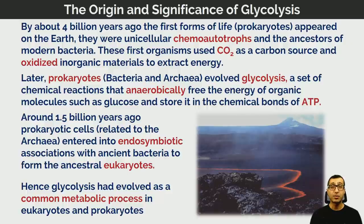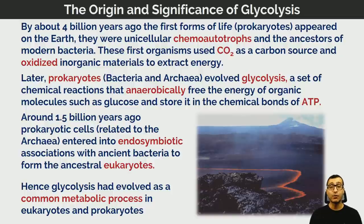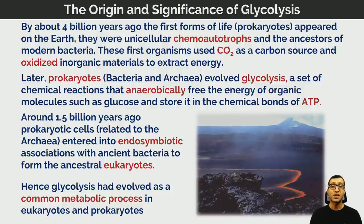These very early organisms were all unicellular chemoautotrophs and the ancestors of modern bacteria. They used carbon dioxide as a source of carbon and oxidized inorganic materials to extract energy. The later prokaryotes — bacteria and archaea — evolved the process of glycolysis, a set of chemical reactions that anaerobically releases the energy in organic molecules such as glucose, storing that energy in the chemical bonds of ATP.